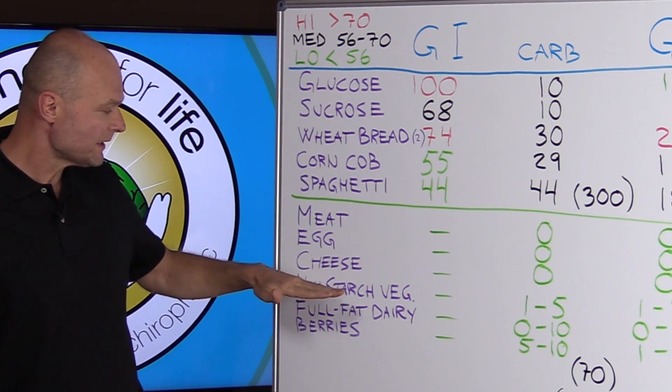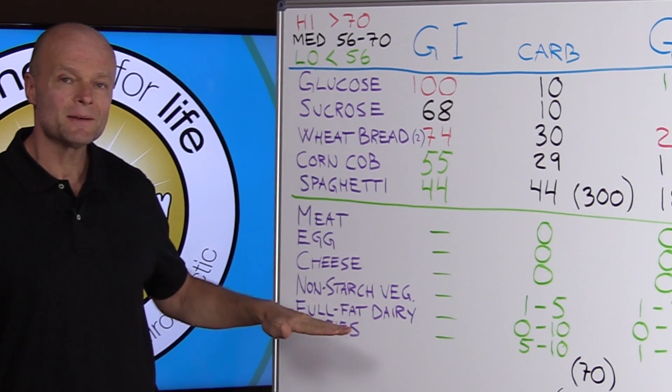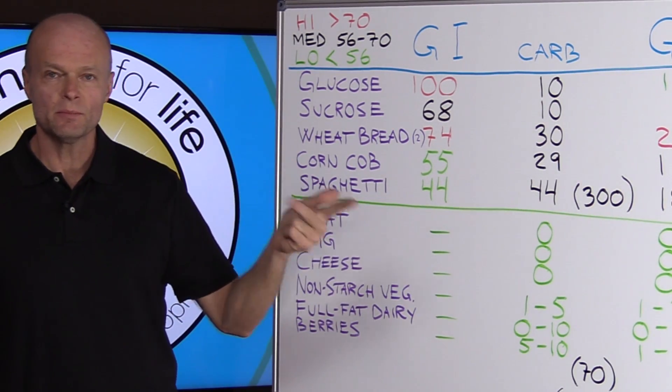And in that category, we also find non-starchy vegetables, full-fat dairy, and some berries, such as raspberries, strawberries, and blueberries.